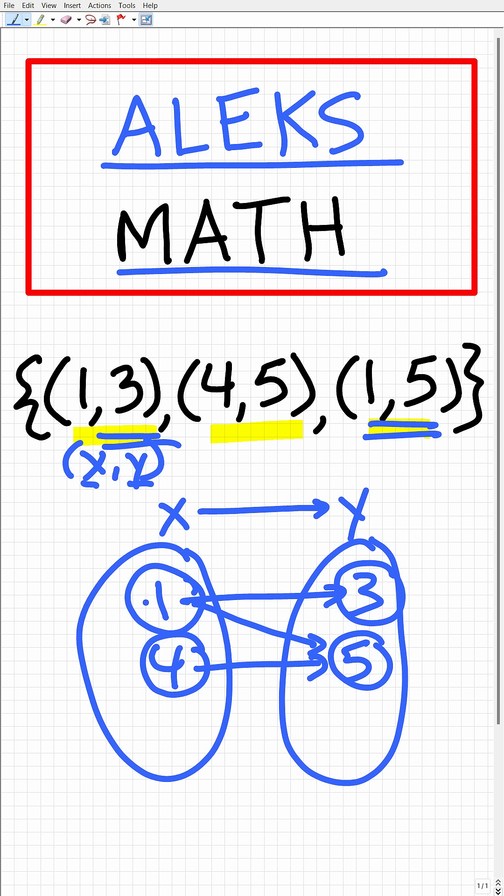So this is not allowed in a function, right? You cannot have one input value, one X, mapped to two output values. So this is a relation and not a function.